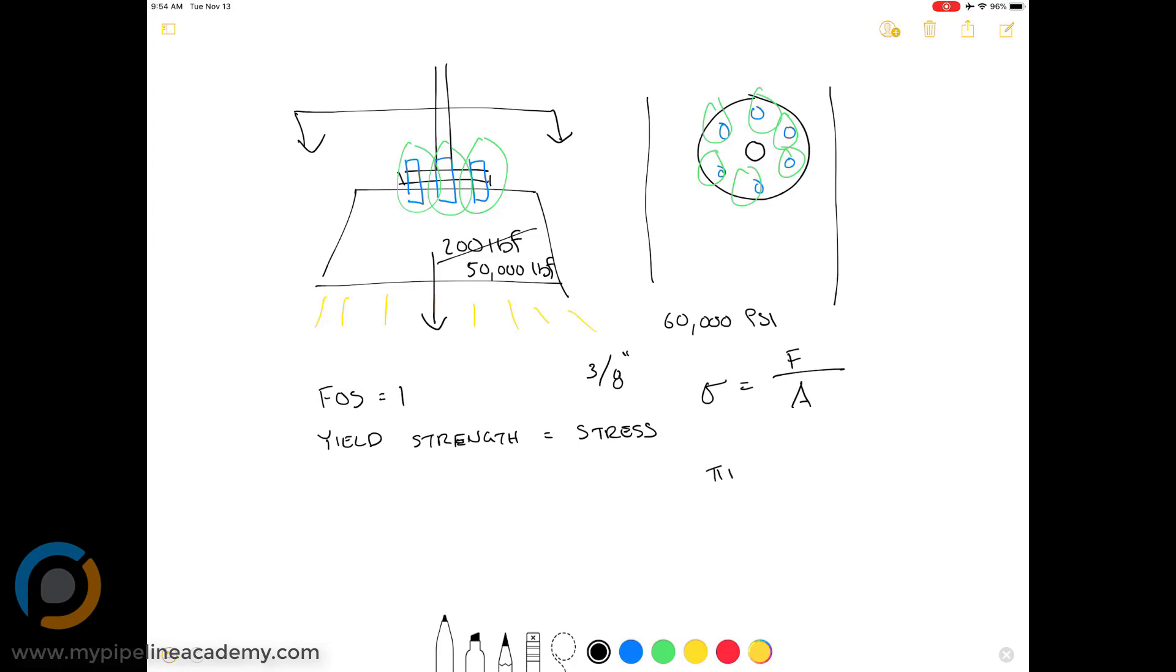So how can we write that? Area is pi r squared. And if we have multiple bolts in there, we can just say that the number of bolts equals n, small n. So if that's the case, then our total cross-sectional area is going to be n pi r squared, right? The number of bolts times pi r squared. So sigma stress equals force over n pi r squared. And we know, because we're looking for a factor of safety of one, in other words, yield strength equals the stress value. We can just say that sigma equals 60,000 psi.